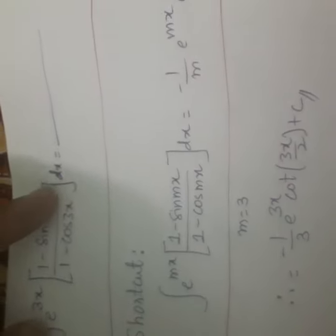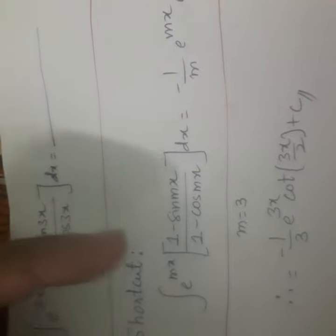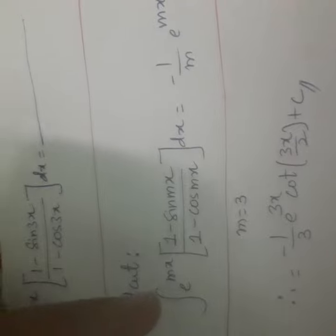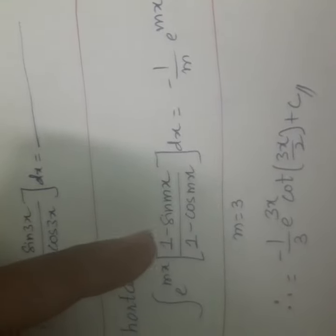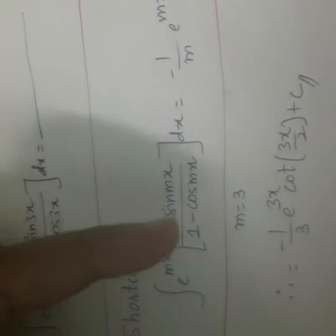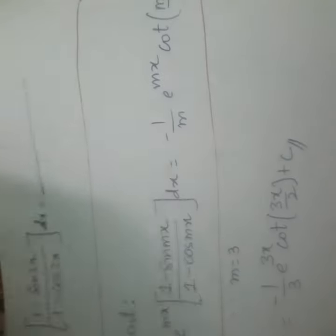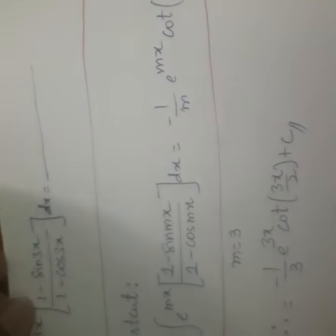In order to solve this problem in MSET and IAT, we have one shortcut. The shortcut is something like this: integration e^(mx) times (1 - sinmx) by (1 - cosmx) times dx is equal to minus 1 by m times e^(mx) times cot(mx by 2) plus C. That will be my shortcut.